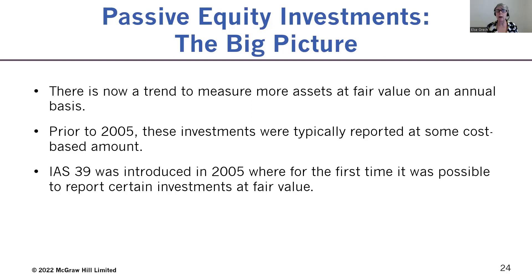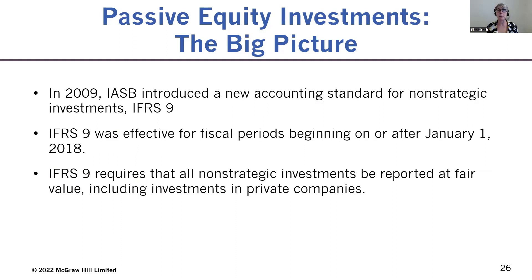Then in 2005, IAS 39 was introduced for non-strategic investments. For the first time, passive investments could be valued at fair value. However, there were problems with IAS 39 in that gains and losses from passive investments could be reported either through the income statement or through a brand new category called other comprehensive income, or OCI. Over time, users and preparers felt that financial statements were getting too complicated. IAS 39 was difficult to understand, apply, and interpret. So IFRS 9, Financial Instruments: Classification and Measurement, was created and came into effect on January 1st, 2018, totally replacing IAS 39.